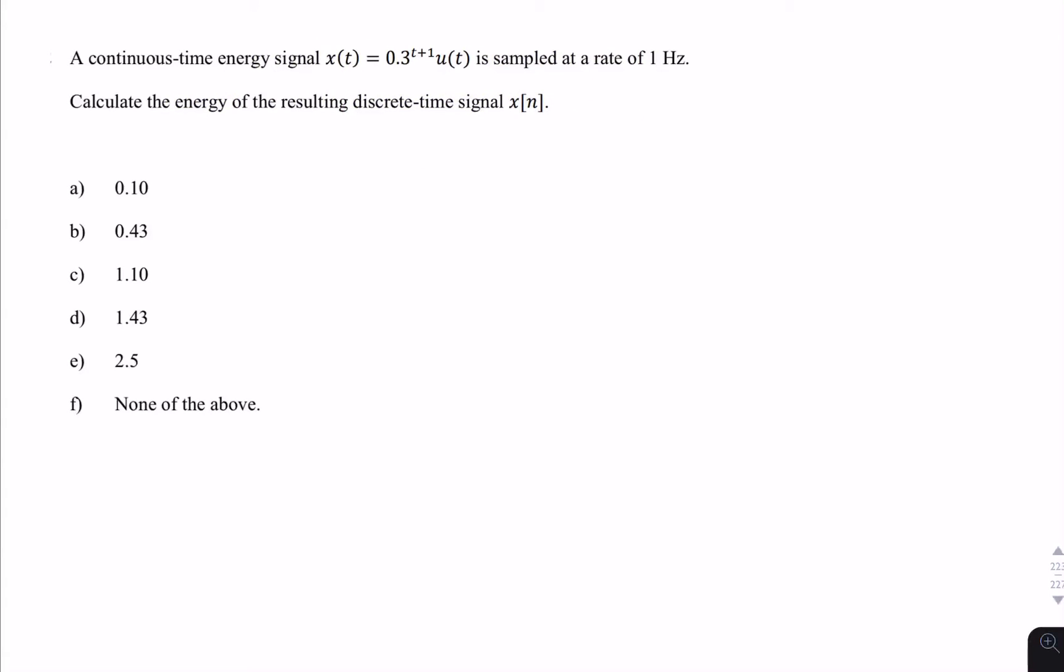To write an expression for x of n, we need to replace t with n times the sampling time, uppercase T. And we get uppercase T from the sampling rate. So 1 hertz, that's the sampling rate.